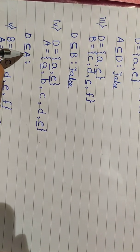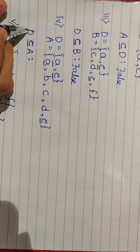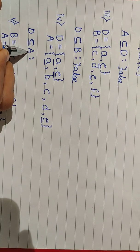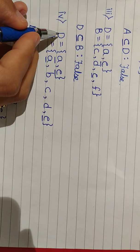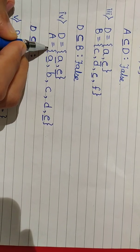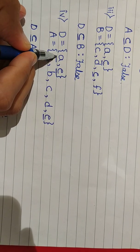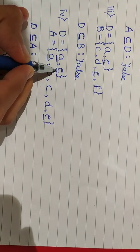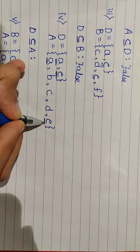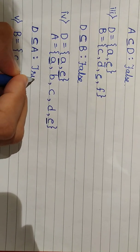Is D ⊆ A — is this statement true or false? To prove D is a subset of A, all the elements of D should be present in set A. Elements of D are A and E. Elements of A are A, B, C, D, E. Here both the elements of set D are also elements of set A. Therefore, the statement D ⊆ A is true.